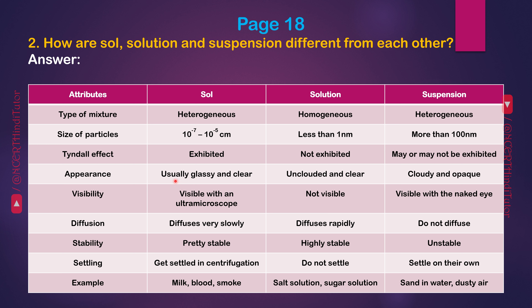Sol appearance: usually glassy and clear. Solution appearance: unclouded and clear. Suspension appearance: cloudy. Sol visibility: visible with an ultra microscope. Solution visibility: not visible. Suspension visibility: visible with the naked eye. Sol diffusion: diffuses very slowly. Solution: diffuses rapidly. Suspension: does not diffuse. Sol stability: pretty stable. Solution stability: highly stable. Suspension stability: unstable. Sol settling: gets settled in centrifugation. Solution: does not settle. Suspension: settles on its own.